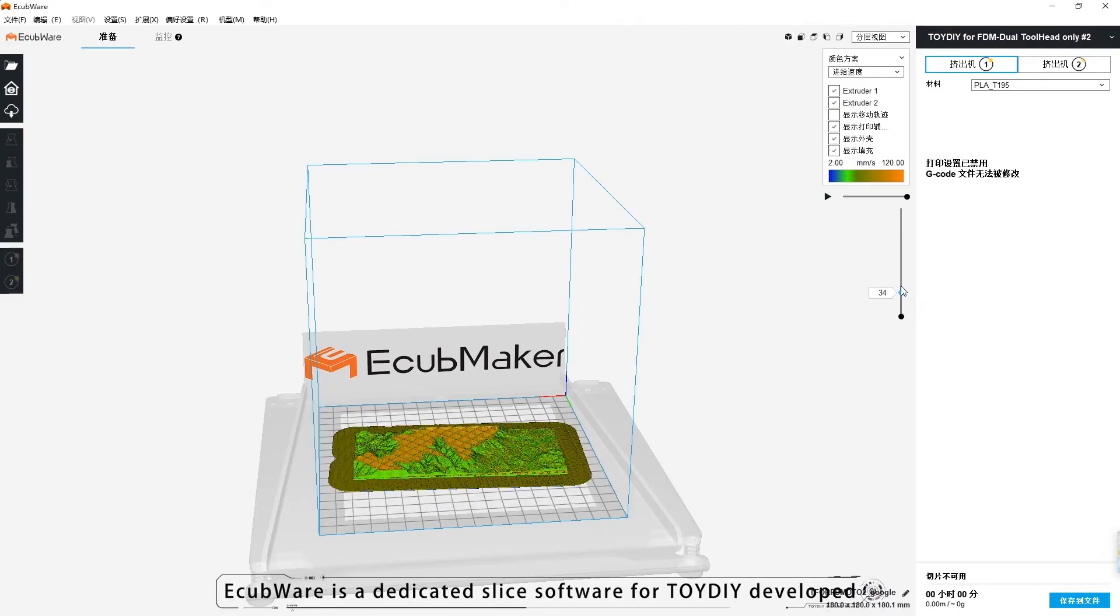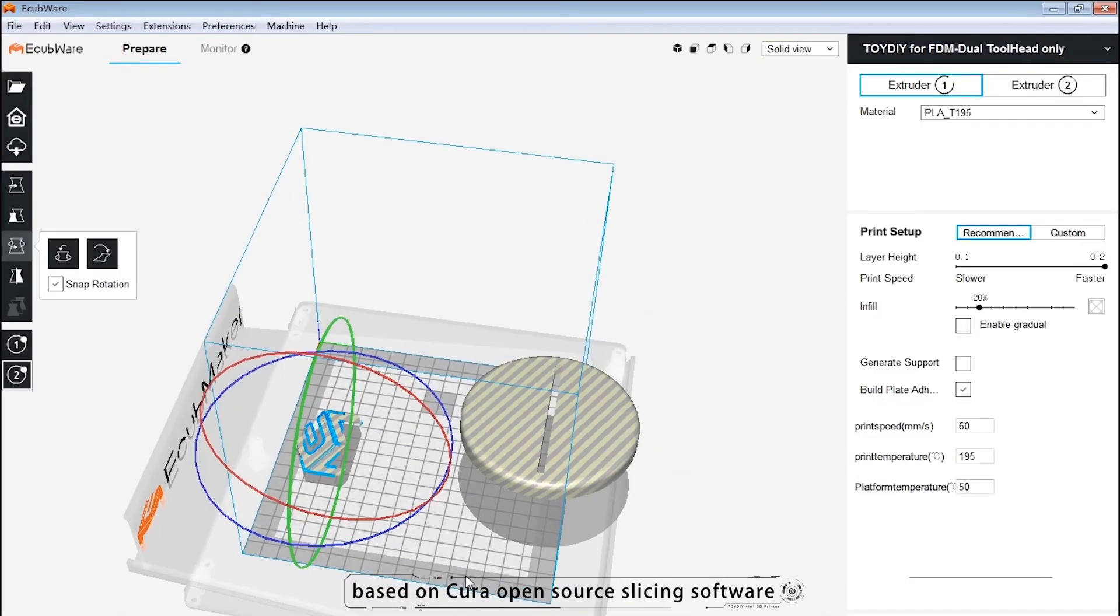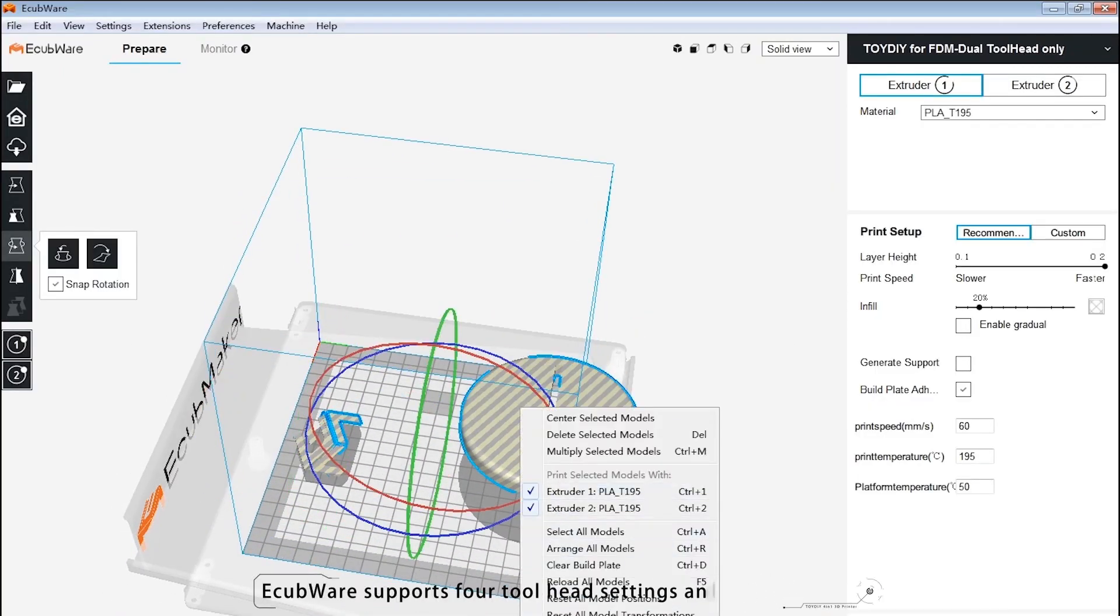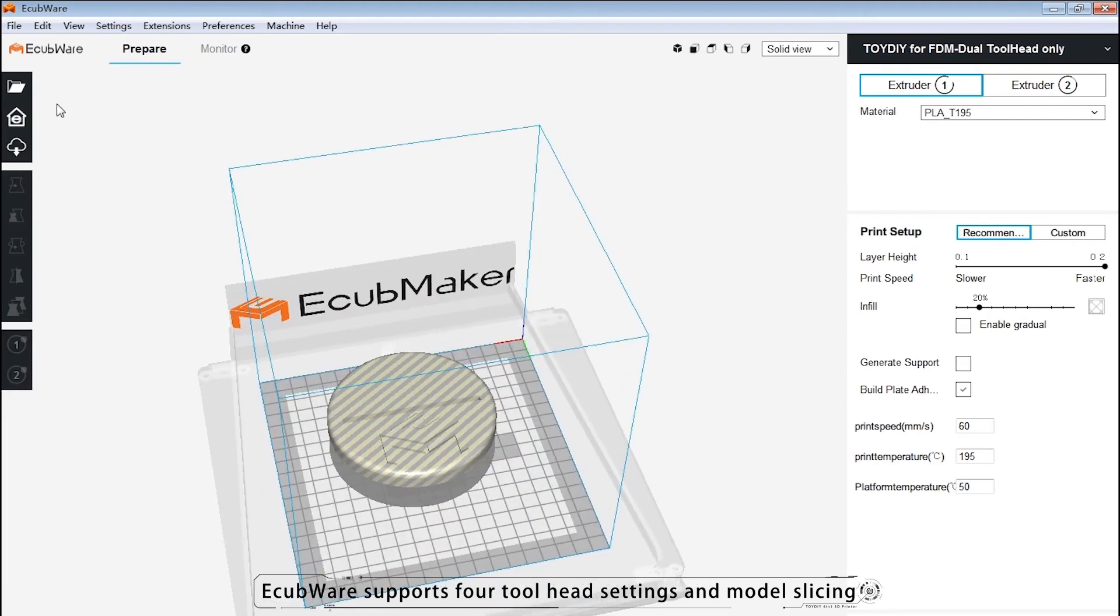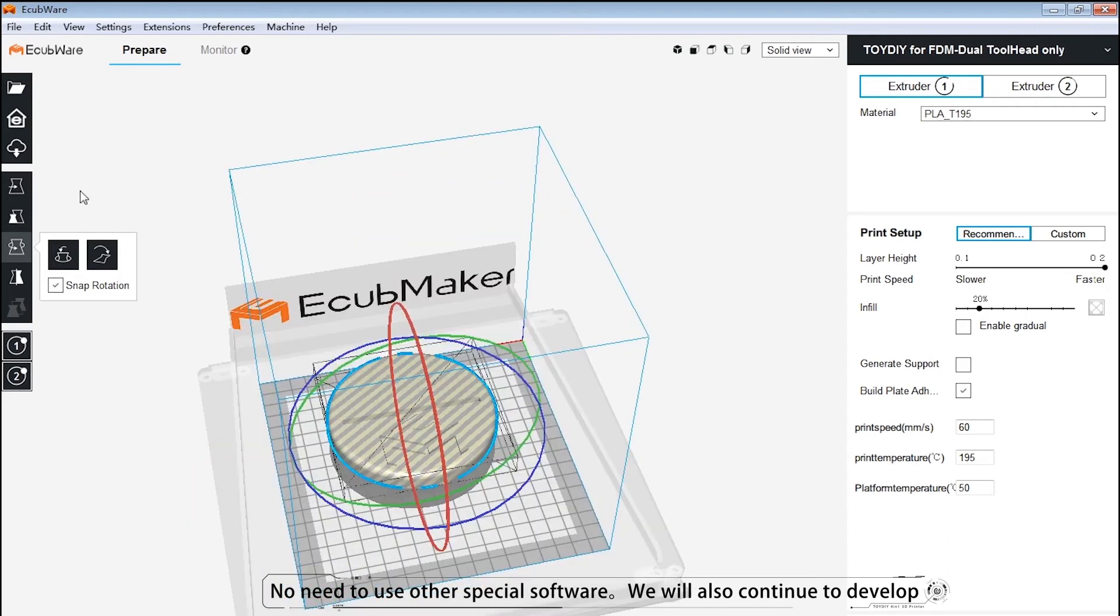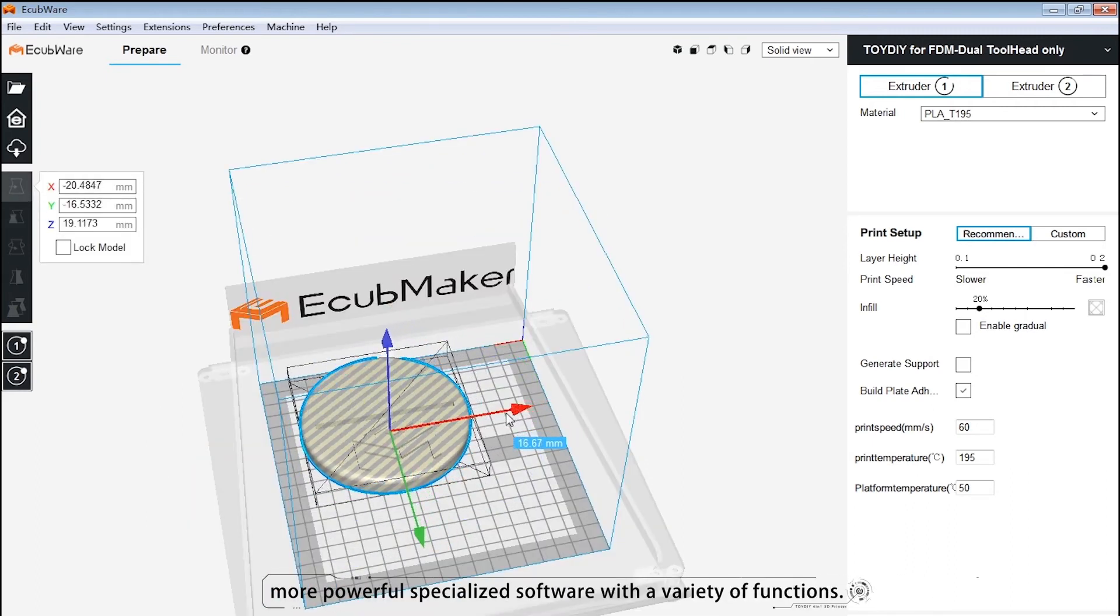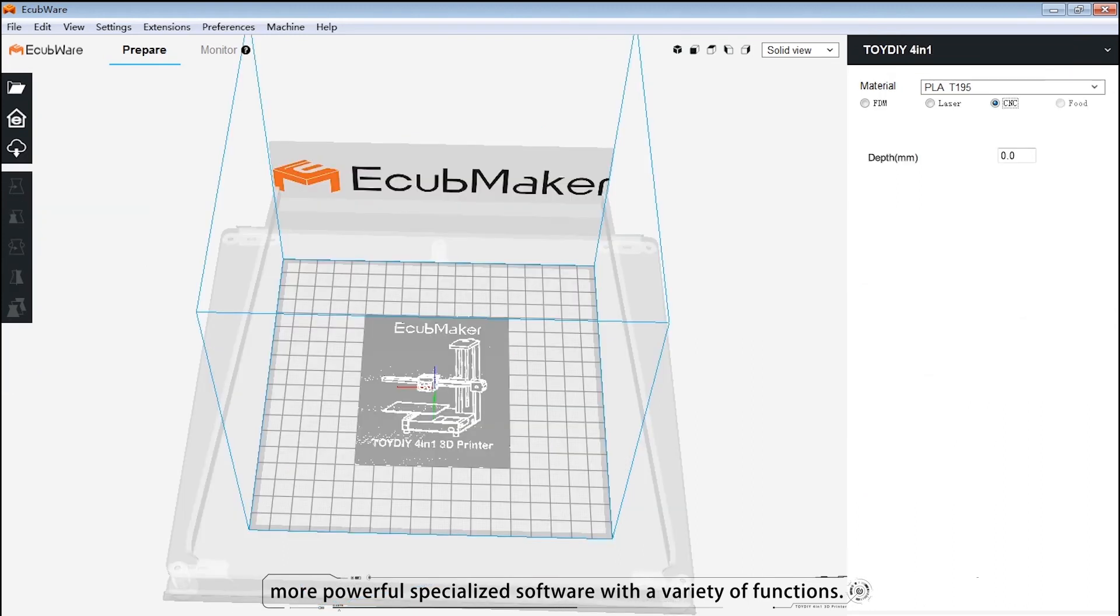Echobware is a dedicated slice software for Toy DIY developed based on Cura open-source slicing software. Echobware supports four toolhead settings and model slicing. No need to use other special software. We will also continue to develop more powerful specialized software with a variety of functions.